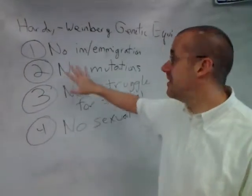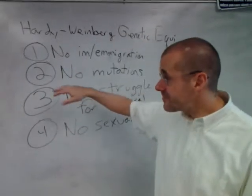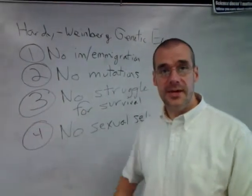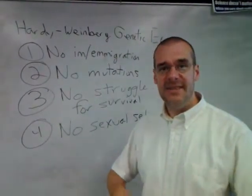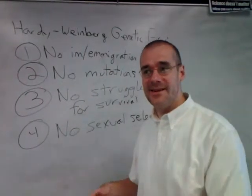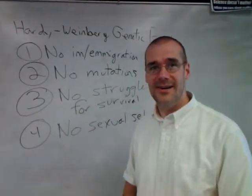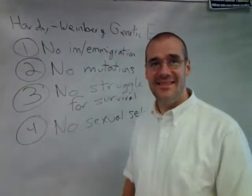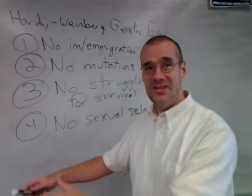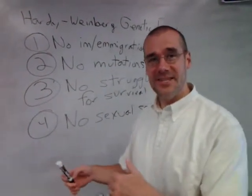So there are a couple ways to use this. The one I want you to focus on right now is this idea: if one through four are true, the population doesn't evolve. But that doesn't happen, so what must be true? If these are not met, then allele frequencies should be changing, and that means populations evolve.